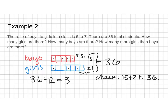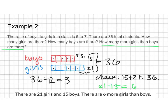So we can see that there are 15 boys and 21 girls. The problem also asks how many more girls than boys there are. To find that, I subtract: 21 girls minus 15 boys gives me 6. So the final answers are: there are 21 girls and 15 boys, and there are 6 more girls than boys.